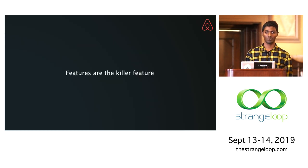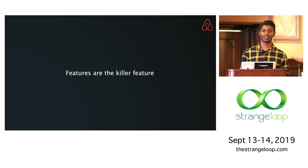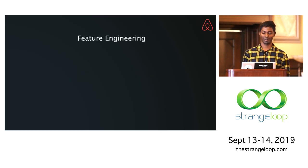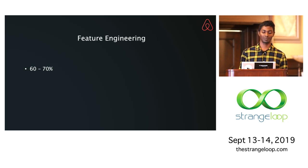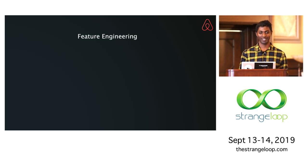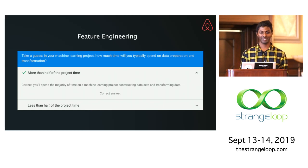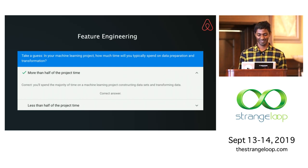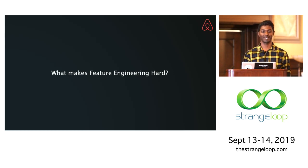Now let's jump into feature engineering. A big part of the time spent in a machine learning project is feature engineering — converting raw data into meaningful features. By our analysis, it's 60 to 70% of the time. This is really important because there's a saying: a good dataset with an okay model always beats a fancy model with mediocre data. This number is also supported by the Google machine learning course, which says you spend more than half your time doing feature engineering.